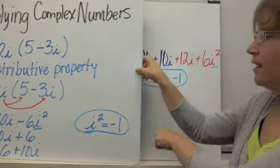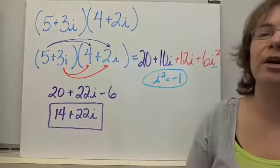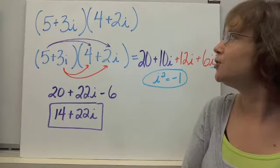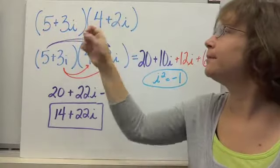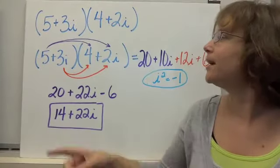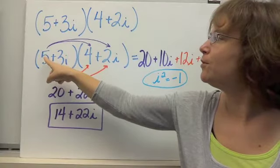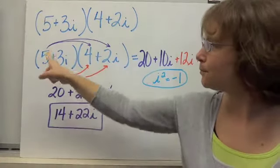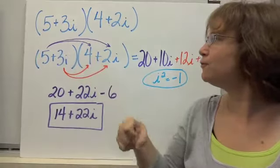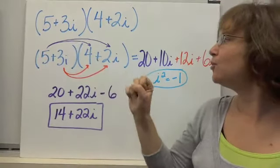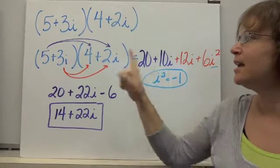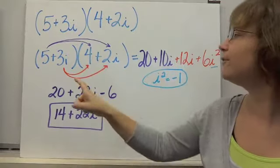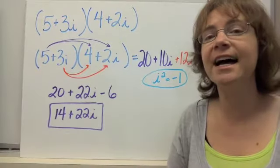Let's look at complex numbers that don't have 0 as part of them. Say we have (5 plus 3i) times (4 plus 2i). This should remind you of multiplying binomials. We're going to distribute the 5 to both parts of this number, and also distribute the 3i to both parts. 5 times 4 is 20, and 5 times 2i gives us positive 10i. Then 3i times 4 gives us 12i, and 3i times 2i gives us 6i squared.